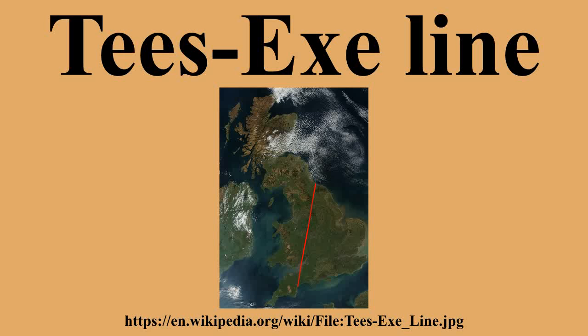The Tees-Exe line is an imaginary north-east to south-west line that can be drawn on a map of Great Britain, which roughly divides the country into lowland and upland regions. The line links the mouth of the river Tees between Redcar and Hartlepool in the north-east of England with the mouth of the river Exe in Devon in the south-west.